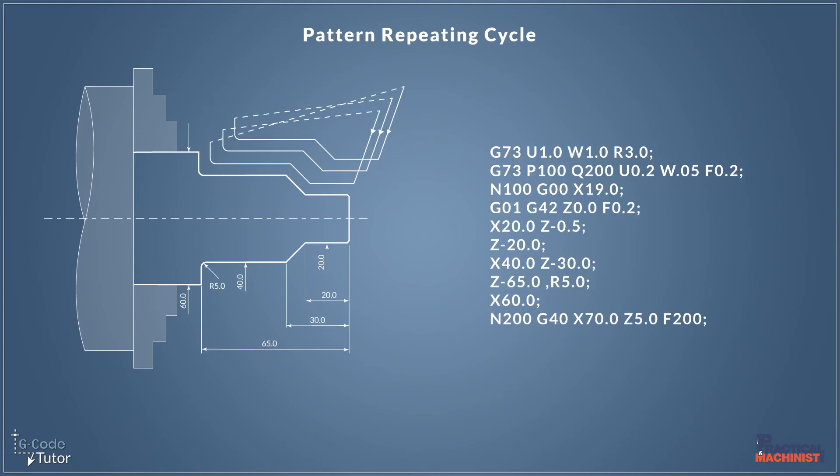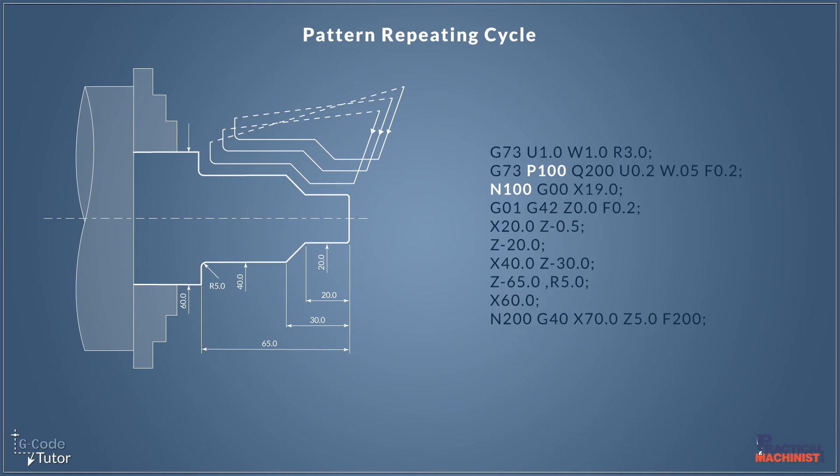I said I would come back to the subroutine, so here it is. This is a section of program taken from the pattern repeating cycle, but it works the same for all the roughing cycles. As we see at the top, we have our two-line G73 cycle with our information in it. After the second G73, we have our P100. That ties in with N100 on the program. This could be P200, P539. As long as the N would be N539, it would call upon that N number in the program as it knows it's the start of the subroutine.